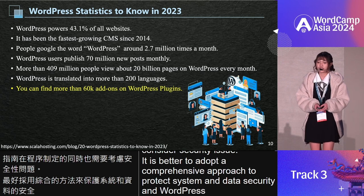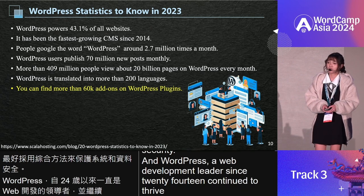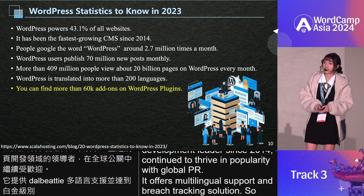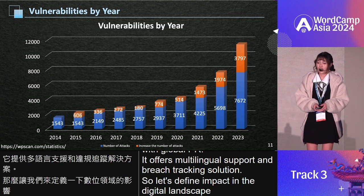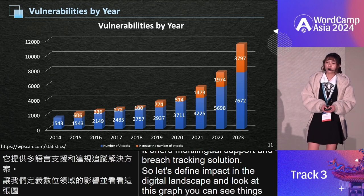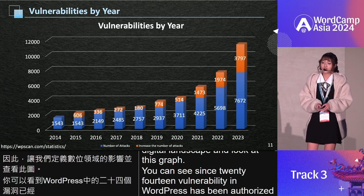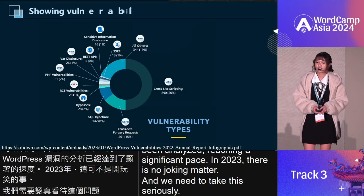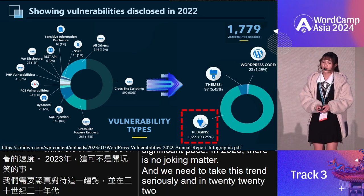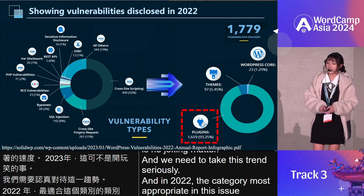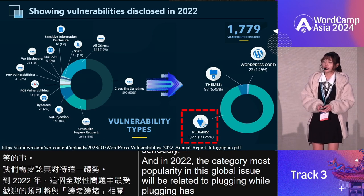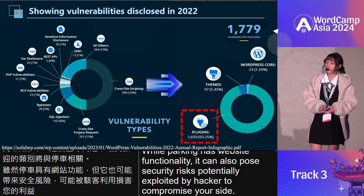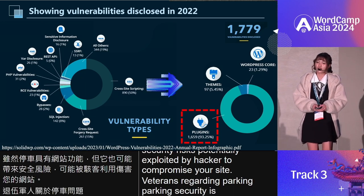WordPress, a web development leader since 2014, continues to thrive in popularity. With global appeal, it offers adaptability through multilingual support and a rich plugin ecosystem, solidifying its impact in the digital landscape. Looking at this graph, you can see that since 2014, vulnerabilities in WordPress have been on the rise, reaching a significant peak in 2023. Data revealed that most vulnerabilities in core WordPress are related to plugins. While plugins add website functionality, they can also pose security risks, potentially being exploited by hackers to compromise your site.